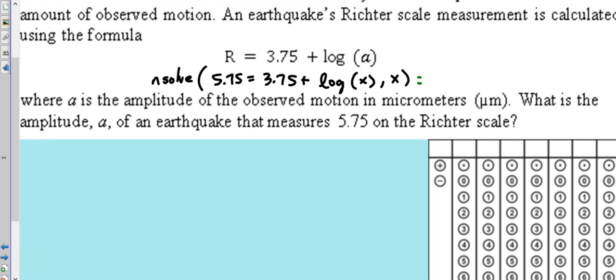But now I'm going to do it using good old-fashioned algebra. You'd set that 5.75 in there, we've got 3.75 plus log of whatever we're looking for, and that's A.